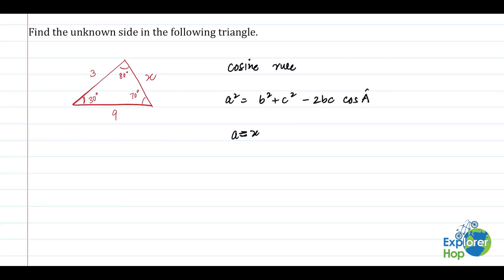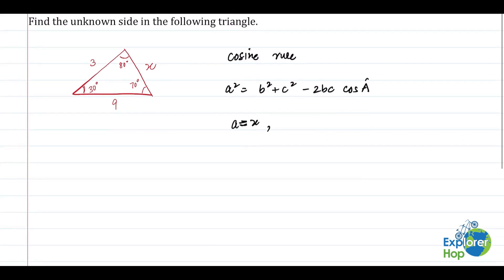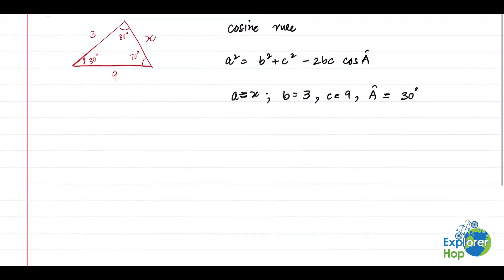The value that we have to find, the unknown side that we are supposed to find. And we can say that b equals 3 and c equals 9, the other two sides. And then angle A, angle A is always the angle that is between the two known sides. So the angle between the two known sides in this case is 30, so angle A equals 30 degrees.